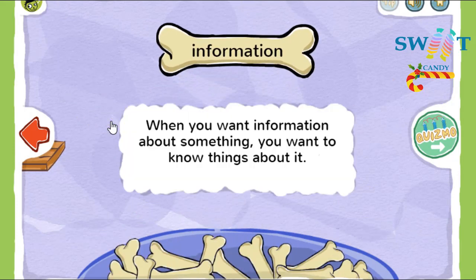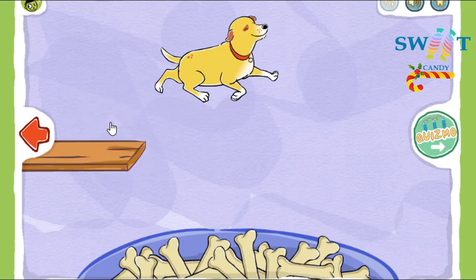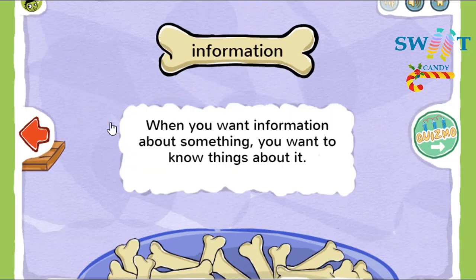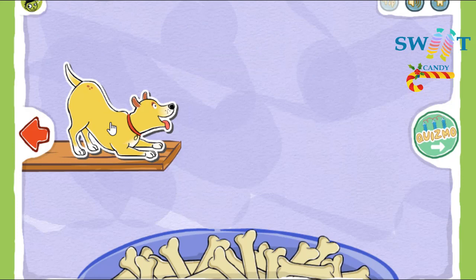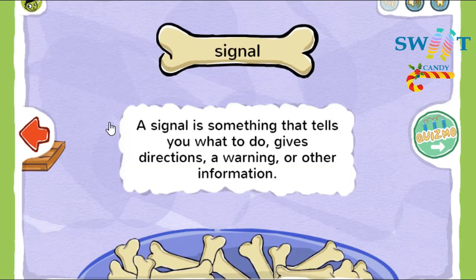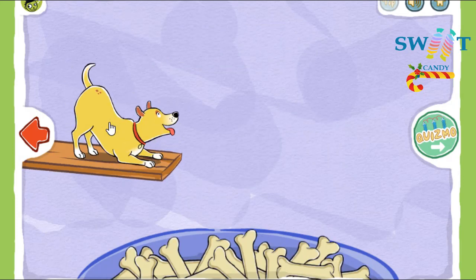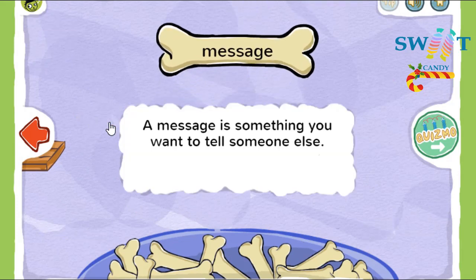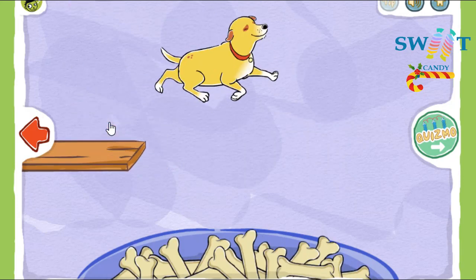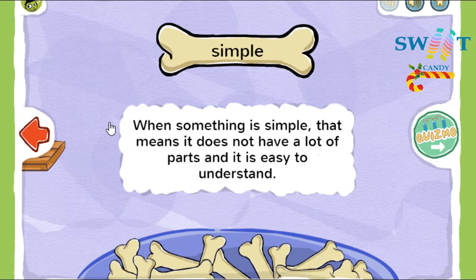When you want information about something, you want to know things about it. A signal is something that tells you what to do, gives directions, a warning, or other information. A message is something you want to tell someone else. When something is simple, that means it does not have a lot of parts and it's easy to understand.